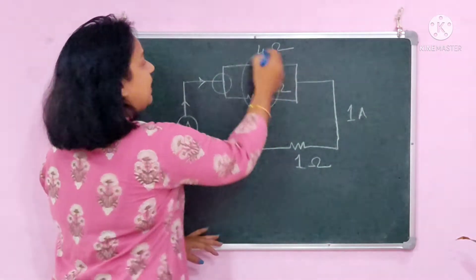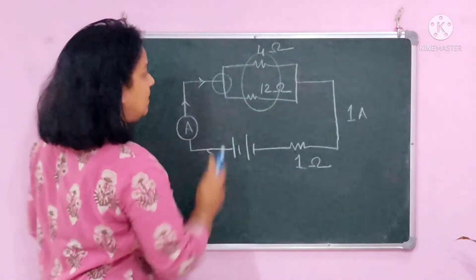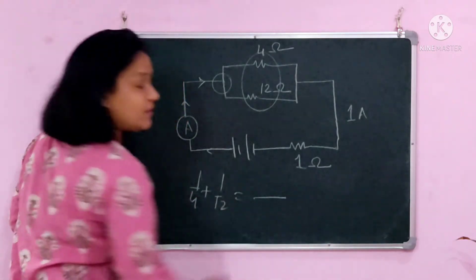This means these two are parallel. Current is on two sides, which means these two resistors are parallel. So this is 1 by 4 plus 1 by 12. It's the total resistance.